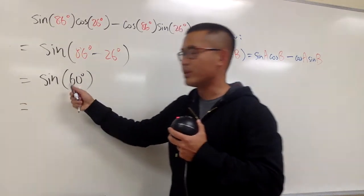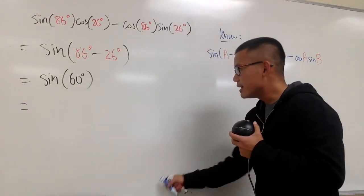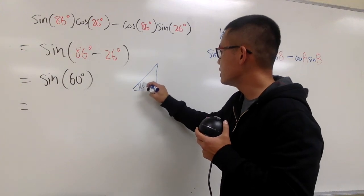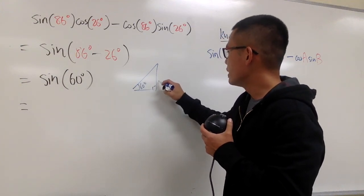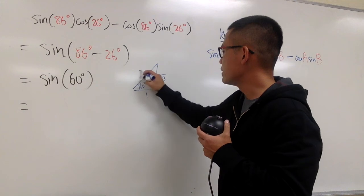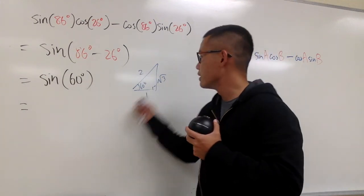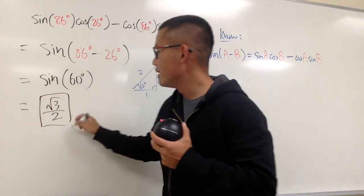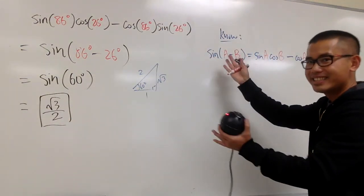And now we can do this. Sine of 60 degrees, let's go ahead and draw this triangle real quick. This is my 60 degrees triangle, and then we have the square root of 3, and this is 1, this is 2. In other words, square root of 3 over 2. And this will be the answer for that. And that's it.